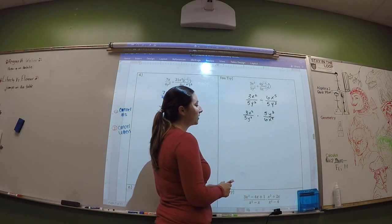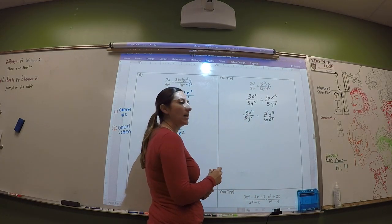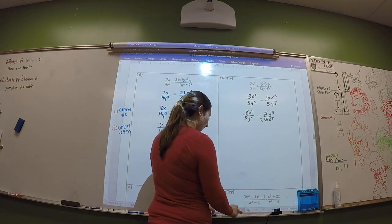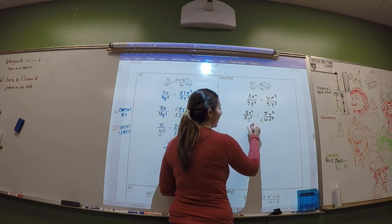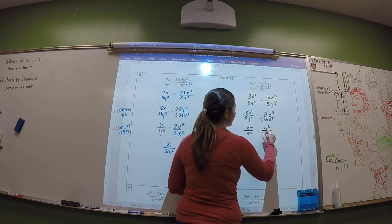Now, numbers. 5 cancels with 5. And 3 goes into 6 twice. Okay, so after that I have x² over y² times y³ over 2x to the fifth.